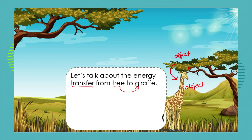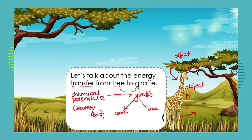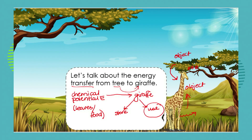The giraffe eats the leaves from the tree, and what we see is a transfer of chemical potential energy present in the leaves into the giraffe's body. The giraffe is going to store some of that chemical energy and use some of it — it has to walk, grow, and reproduce. All of those living processes are how it uses the energy, while some is stored for when it's not eating.